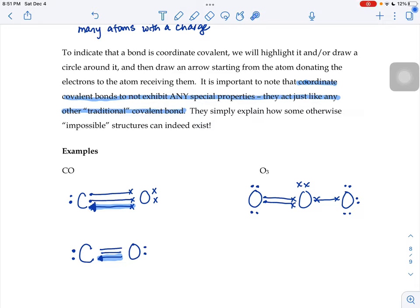Now my right hand oxygen has 8, my middle oxygen has 8, and my left hand oxygen has 8. Everybody has what they want. So this bond right here was our coordinate covalent bond. Both of the electrons came from the oxygen in the center.